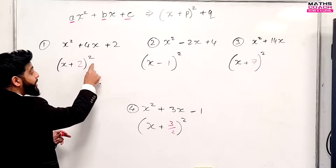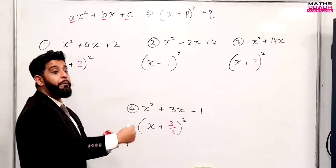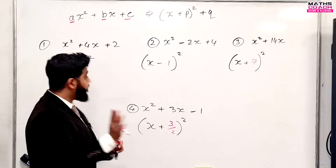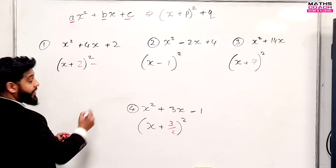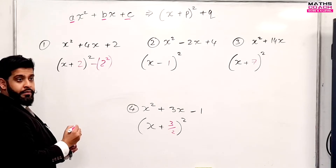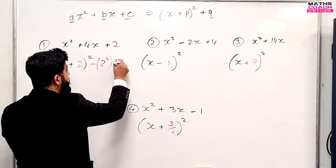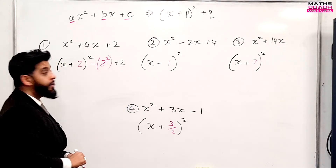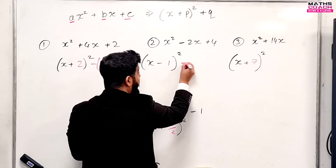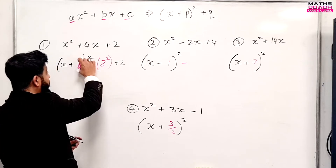The next step is that whatever B value you put inside the brackets, you have to take it away by squaring it first and then subtracting. So for the first expression you're going to take away two squared. Whatever constant was already there can remain.